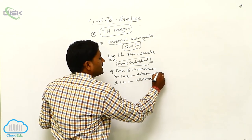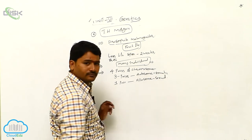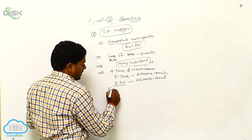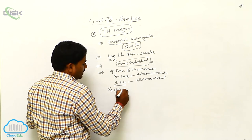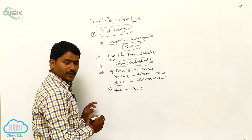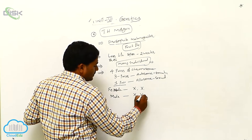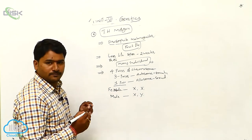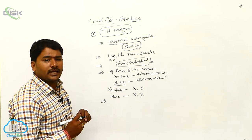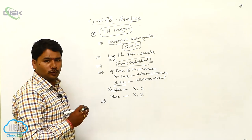The autosomes are somatic chromosomes and the allosomes are sexual chromosomes. In the one pair of allosomes, if you take female, it has both X chromosomes (XX). If you take male, it has 1 X chromosome and 1 Y chromosome. Drosophila can be easily observed by simple microscopes.